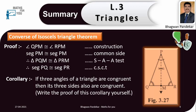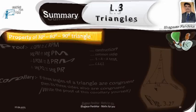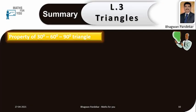Corollary: if three angles of a triangle are congruent, then its three sides are also congruent. Write the proof of this corollary yourself — this is your homework. Property of 30 degree, 60 degree, 90 degree triangle.